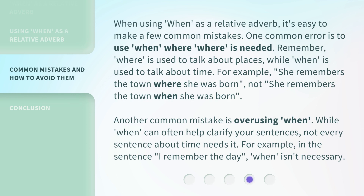When using 'when' as a relative adverb, it's easy to make a few common mistakes. One common error is to use 'when' where 'where' is needed. Remember, 'where' is used to talk about places, while 'when' is used to talk about time. For example: 'She remembers the town where she was born,' not 'She remembers the town when she was born.'